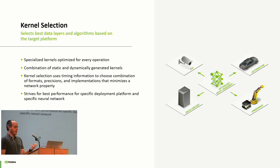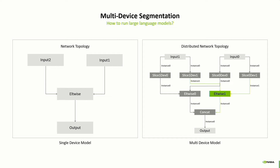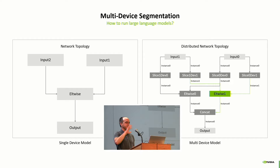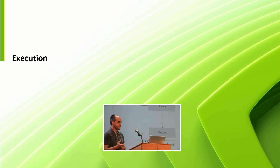Large language models don't fit on a single device, so you have to optimize for multiple devices. A simple element-wise network runs on a single device, but when inputs get large enough, you run on multiple devices using a distributed network topology. You split each input in half and send parts to different devices. Figuring this out for neural networks with 10,000 nodes across multiple devices is still largely an unsolved problem.